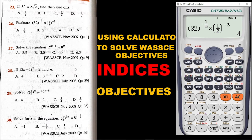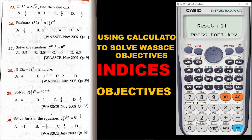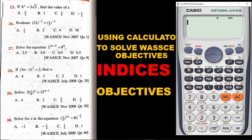Now let's go to the next question. I want to clear my calculator so I can have free space to solve the next question. The next question says: solve the equation 2^(2x − 5) = 8^0. I want to enter this equation on the calculator. So I hit on 2, then I go for the exponent key.